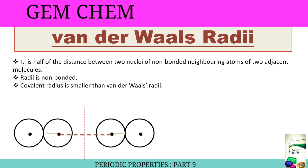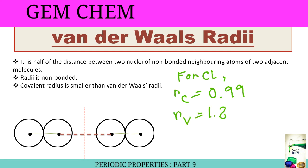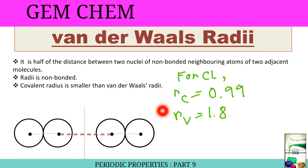For the chlorine example: covalent radius R_C = 0.99 Å and van der Waals radius = 1.8 Å. We can see that covalent radius is smaller than the van der Waals radius — this is an important point to remember.